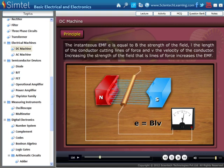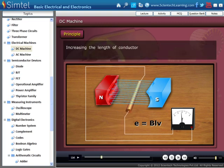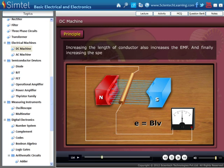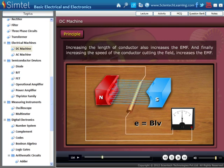Here, increasing the strength of the field, that is line of force increases the EMF. Increase in the length of conductor also increases the EMF. And finally increasing the speed of the conductor cutting the field increases the EMF.